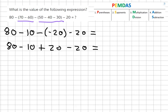Now as we can see here, we've got a plus 20 and a minus 20, and these will cancel each other out. So our final equation becomes 80 minus 10, which gives us our final answer of 70.